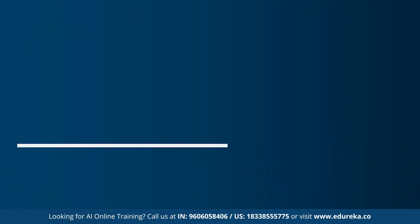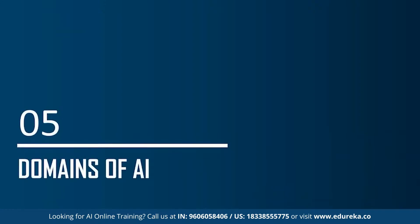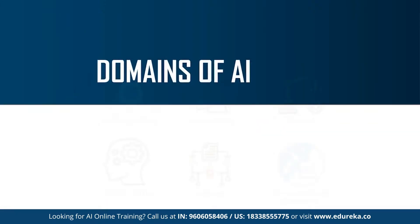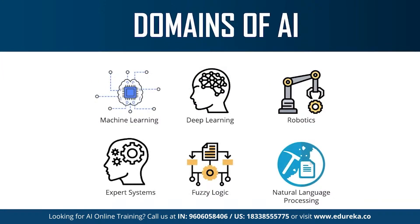Moving on to the last topic: the different domains or branches of artificial intelligence. AI can be used to solve real-world problems by implementing machine learning, deep learning, natural language processing, robotics, expert systems, and fuzzy logic. AI has also recently been applied in computer vision and image processing. Machine learning is the science of getting machines to interpret, process, and analyze data in order to solve real-world problems, covering supervised, unsupervised, and reinforcement learning.